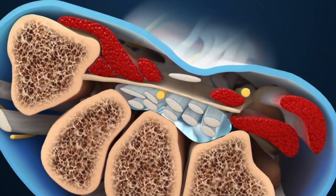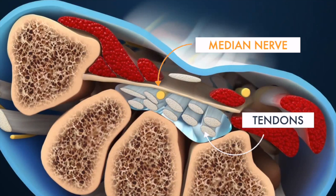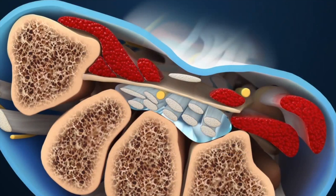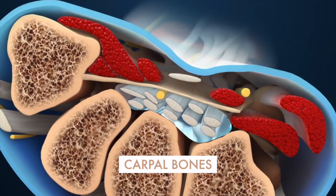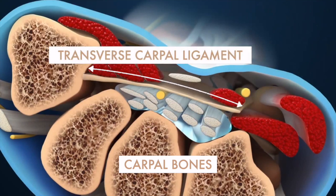The carpal tunnel is a narrow passageway in the wrist, consisting of the median nerve and nine tendons. The floor and sides of the tunnel are formed by small wrist bones called carpal bones, and the tunnel's roof is a band of connective tissue called the transverse carpal ligament.